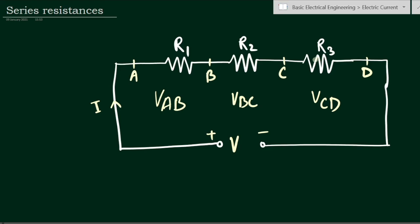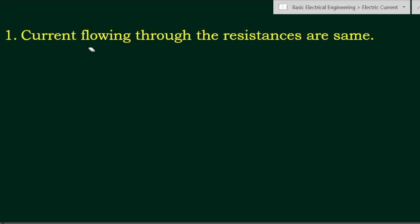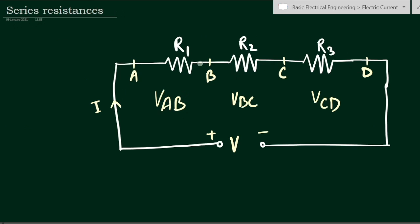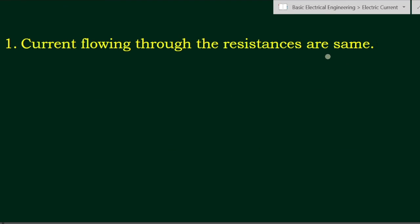The first characteristic is that the current flowing through the resistances is the same. In a series connection, the current flowing through each resistance is equal. Whatever current flows through R1 will also flow through R2 and R3. The current flowing through all resistances is exactly the same, and we assume it equals capital I.